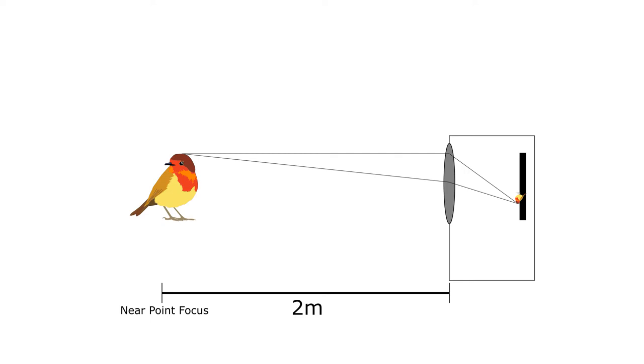We begin with our little Inkscape camera. It has a camera lens and a sensor. The bird sits at the near point focus of the camera, which is about 2 meters away. At this distance, the light reflects off the bird through the lens and focuses neatly onto the sensor. But you can see the image on the sensor is really small because the bird is too far away.